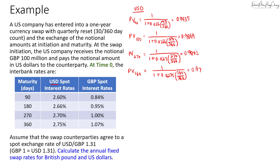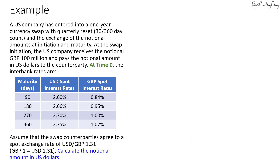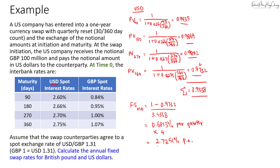Summing all four present value factors gives a total of 3.9338. The fixed swap rate for US dollars is calculated as (1 minus the last PV factor) divided by the total PV: (1 − 0.9732) / 3.9338 = 0.6813% per quarter. Annualizing by multiplying by four gives approximately 2.7251% per annum — that's the annualized fixed swap rate for the US dollar side.